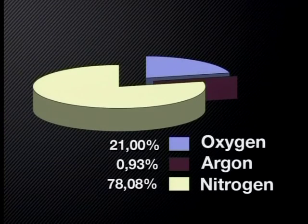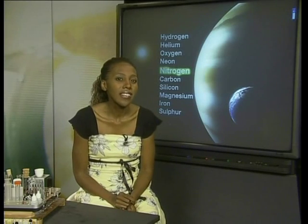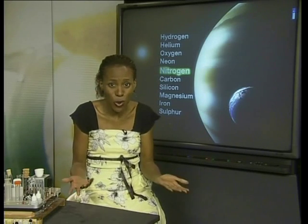We already know that nitrogen makes up 78.08% of the atmosphere and is the Earth's most abundant gas. It is also the fifth most abundant element in the universe. However, there is a shortage of useful nitrogen on Earth because organisms cannot use the nitrogen gas that is in the air. It's like being thirsty on the beach — lots of water, but none that will quench your thirst.